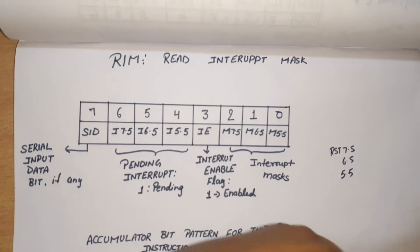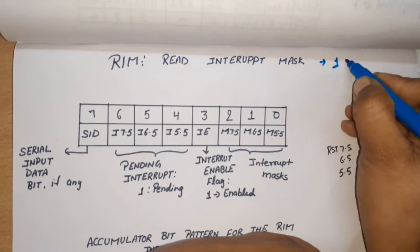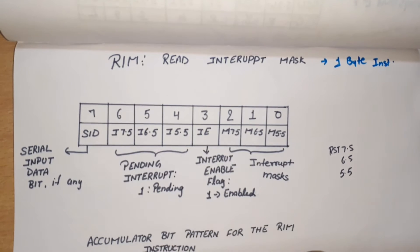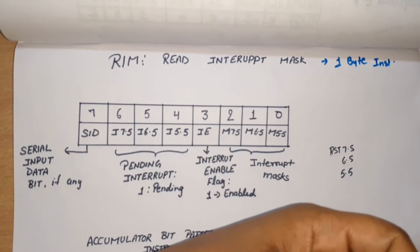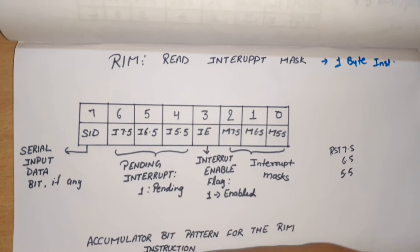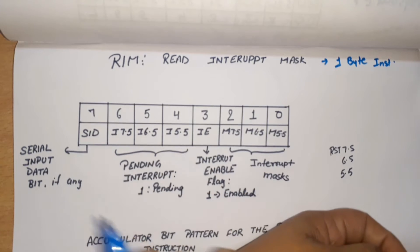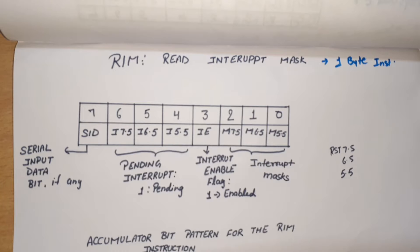RIM is a one-byte instruction. What one-byte instruction means is if we write this instruction in a program, its execution will use one memory location. What is the function of RIM? R for Read, I for Interrupt, M for Mask. Basically RIM is used to read the status of interrupts. It performs three functions.